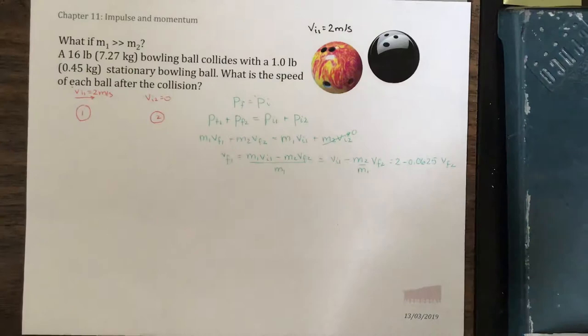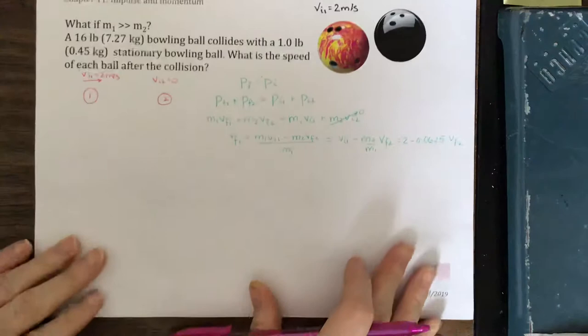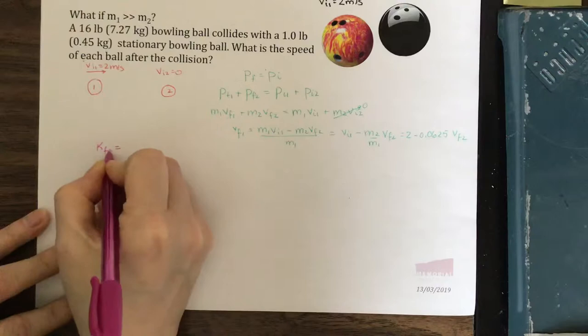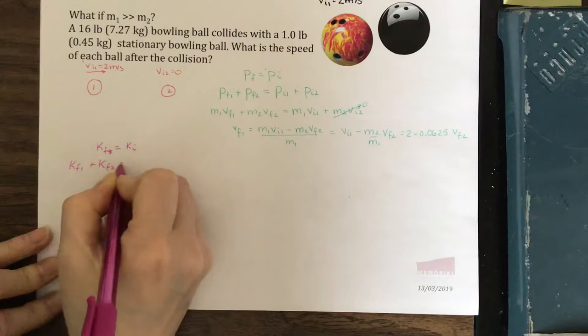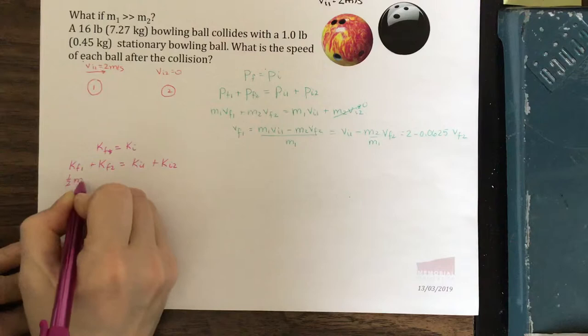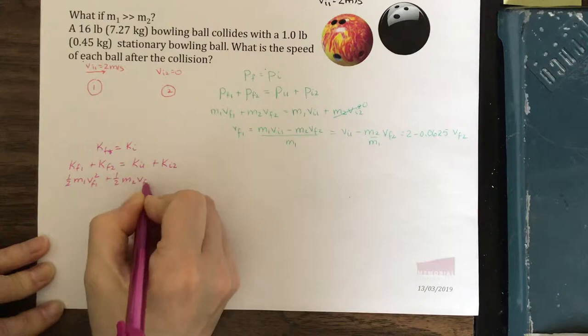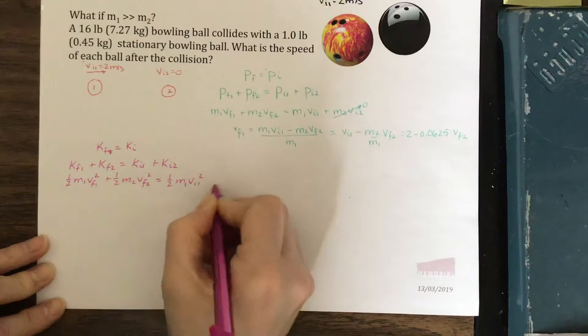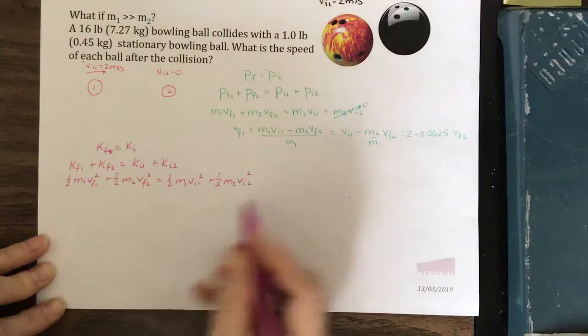Now let's write down our equation for conservation of kinetic energy because it's an elastic collision. So k final equals k initial. k final 1 plus k final 2 equals k initial 1 plus k initial 2. 1 half m1 v final 1 squared plus 1 half m2 v final 2 squared equals 1 half m1 v initial 1 squared plus 1 half m2 v initial 2 squared. Right off the bat, this term is 0 because the second ball is initially stationary.